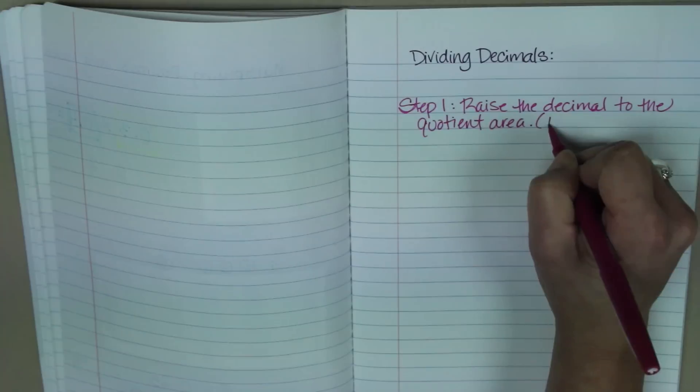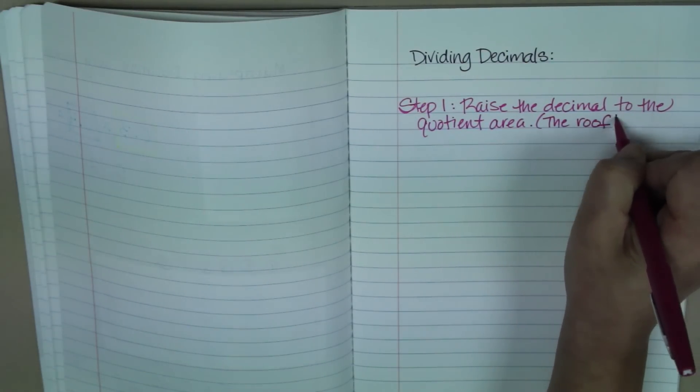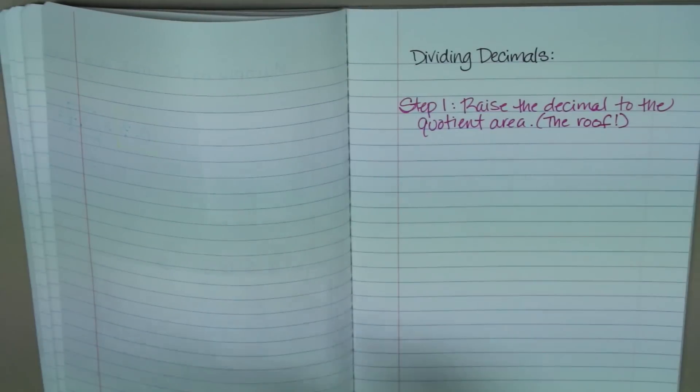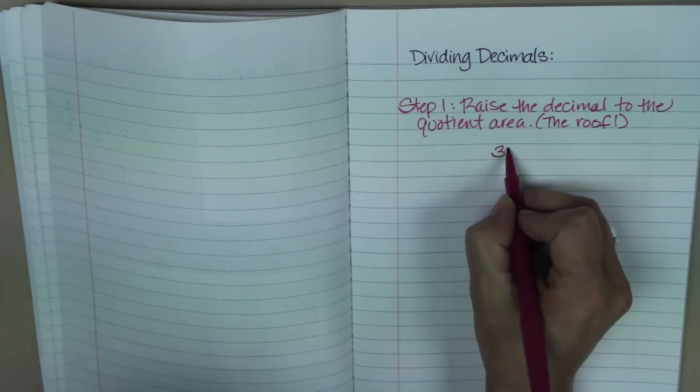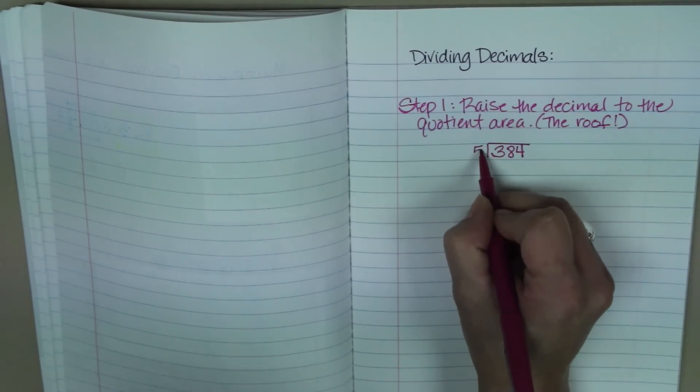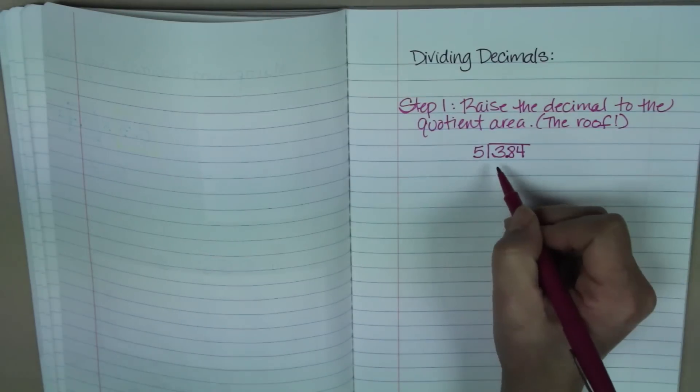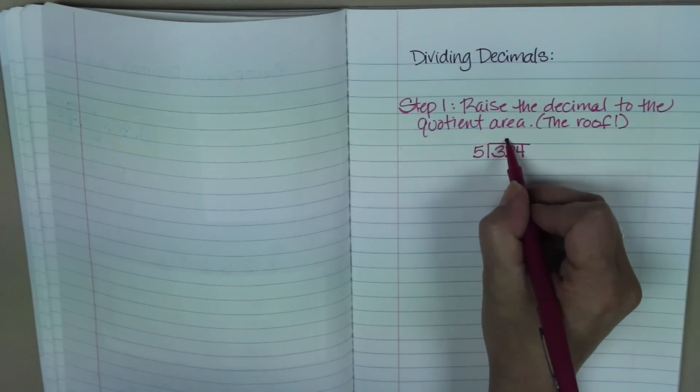I like to call it the roof, and I'll show you what that looks like. Okay, so if I had the example of, let's see, 384 divided by 5, or 3 and 84 hundredths divided by 5. Well, when I mean raise it to the roof, I mean bring that decimal up to where the quotient would be.